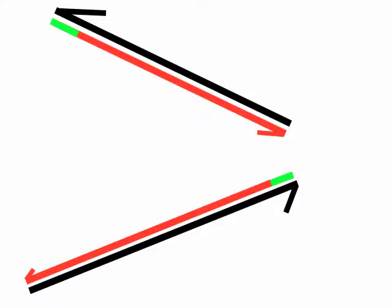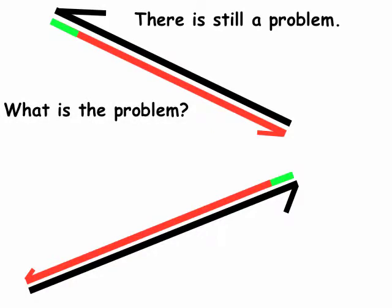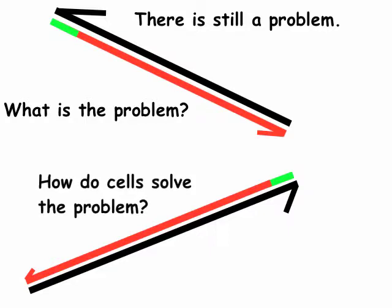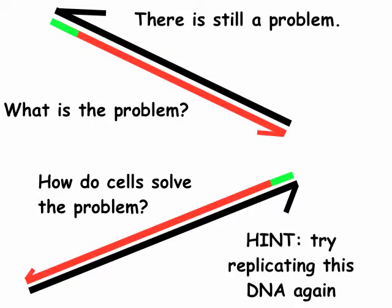There is, however, a problem. I want you to think about what this problem is, recognize it, and read and understand how cells solve it — come to class on Monday ready to discuss how this problem is dealt with. If you don't understand what the problem is, try replicating this DNA again and remember that the DNA polymerases we've talked about so far are DNA-dependent DNA polymerases — the template must be DNA in order for them to extend on it.